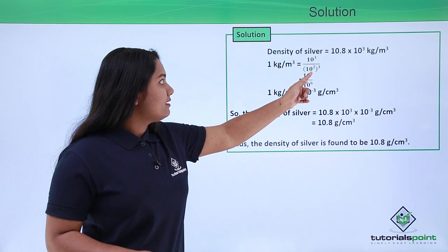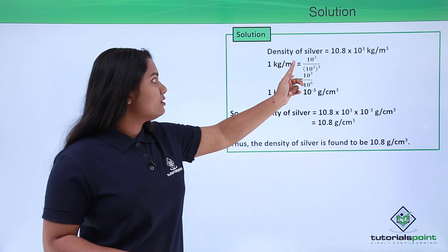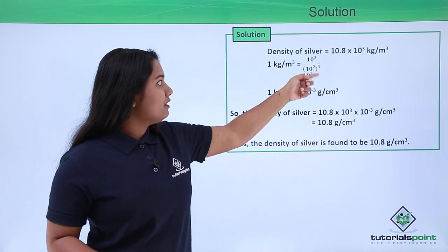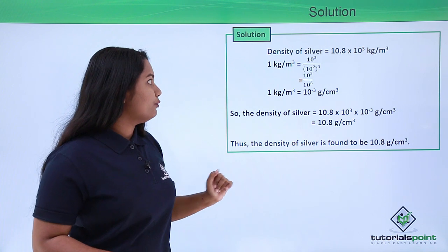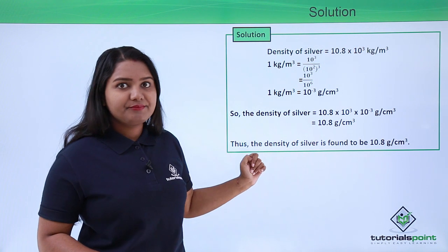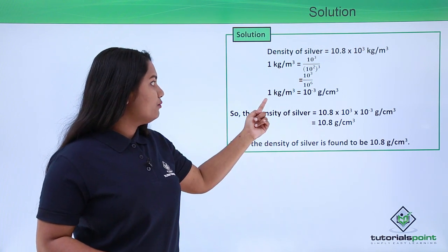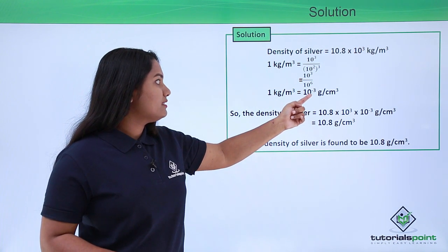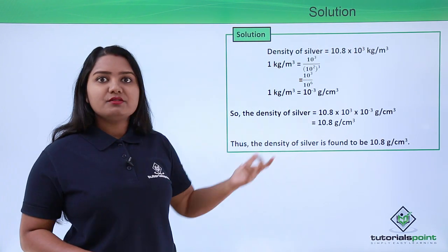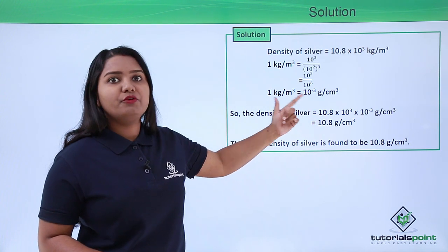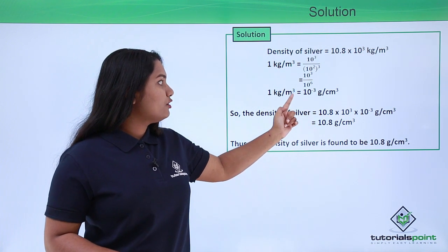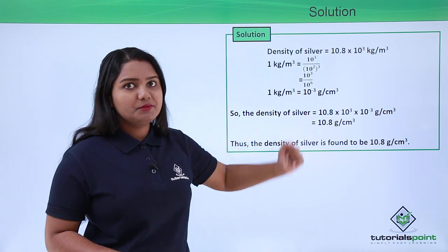Since we have meters cubed in the denominator, it becomes (10²)³ = 10⁶. So on evaluating this, we have 10³ divided by 10⁶, which gives 10⁻³. Therefore, the conversion formula is: 1 kg per meter cube equals 10⁻³ grams per centimeter cube.